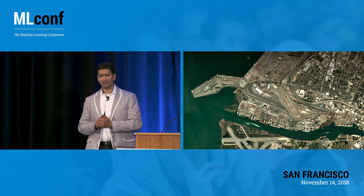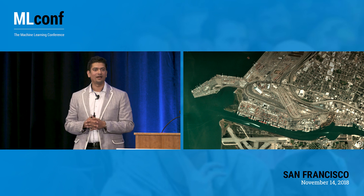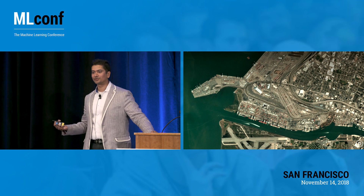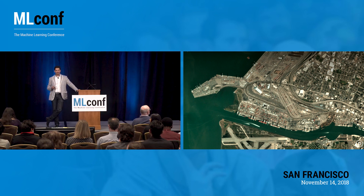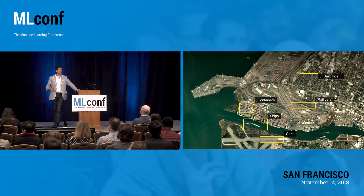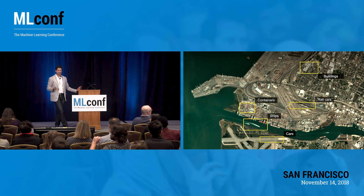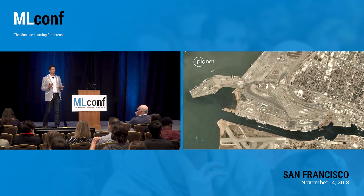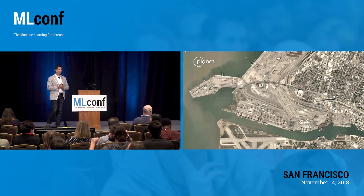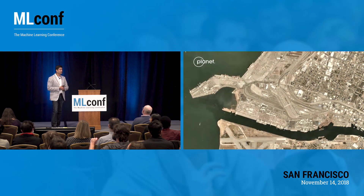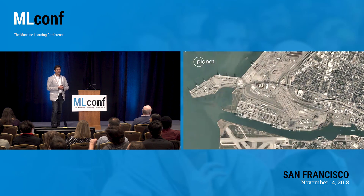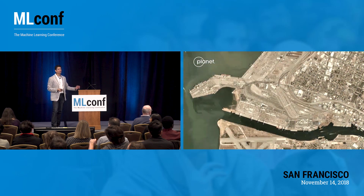I want to talk about the possible applications you can build with this. Close to San Francisco is Oakland — this is the Port of Oakland. You can see a range of different objects clearly visible in our imagery: shipping containers, ships coming in and out of the port, cars, rail vehicles, and buildings. Over the course of a month, you see ships coming in and out, containers getting docked and undocked, and buildings getting constructed — a very live picture of what's actually happening on the ground.